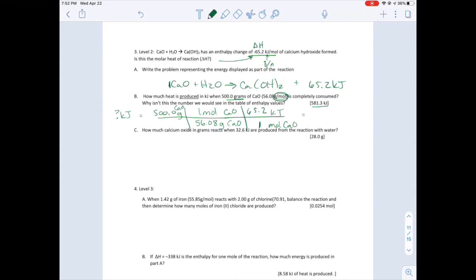Now we're going to turn the problem around. When you have 32.6 kilojoules produced, they want to know how much calcium oxide is made. So we're going to take 32.6 kilojoules. Then we need to go from kilojoules to moles. We know we're going to go to calcium oxide because it says in the problem. Then we're going to go from moles of calcium oxide into grams, because it wants the answer in grams.